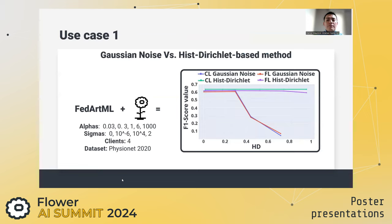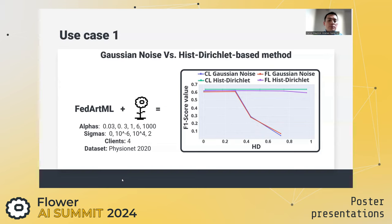Using our library, Flower, and the FEMNIST 2020 dataset, we made a comparison between the Gaussian noise and the HIST-Dirichlet method, showing that with our new method we do not damage the performance of the model, and also that high levels of feature skew do not decrease the result of the model.